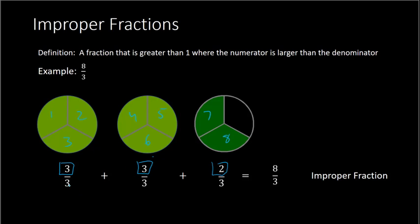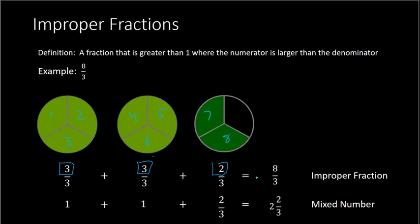Another way to think of this: 3 thirds is one entire quantity, like one pizza. So we have one whole pizza, plus another whole pizza, plus 2 thirds. That means 1 plus 1 is 2, giving us 2 and 2 thirds. We write this as 2 and 2 thirds, which is called a mixed number — because we have mixed a whole number, 2, with the fraction 2 thirds.